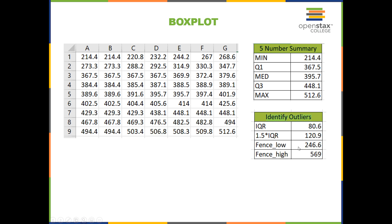Now we're able to identify any outliers in the original data set. Notice that we have several values lower than the low fence of 246.6. The value 267 is the lowest value in the data set that is not an outlier — you could think of it as the minimum usual value. The largest value in the data set is 512.6, which is below the high fence, so there are no outliers on the high end.